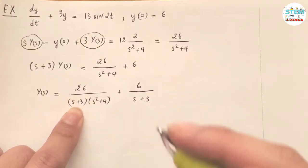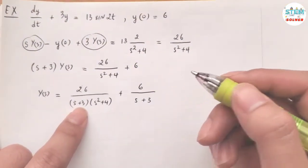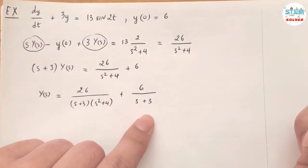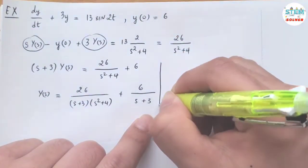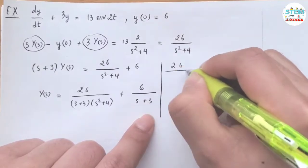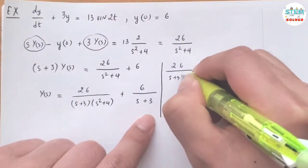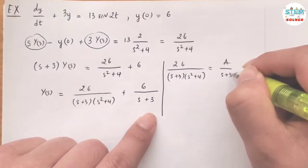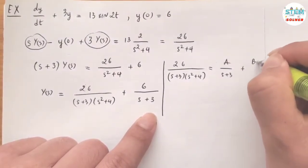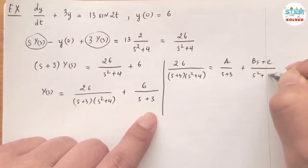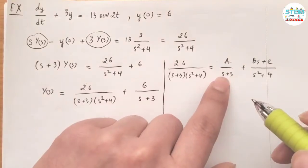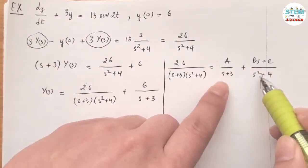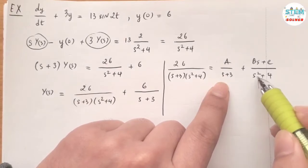For the first term we need partial fraction decomposition. So I write: 26 over (s plus 3)(s squared plus 4) equals A over (s plus 3) plus (Bs plus C) over (s squared plus 4). For the linear factor I have only A, but for the irreducible quadratic I have Bs plus C.